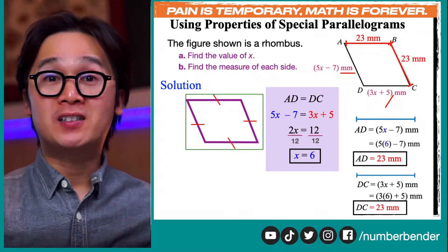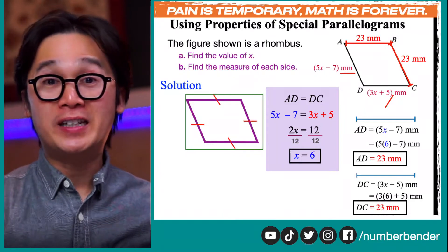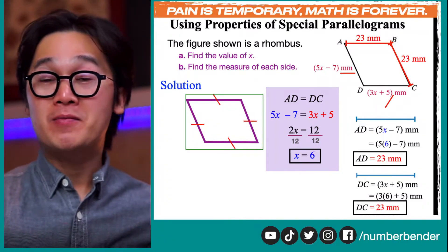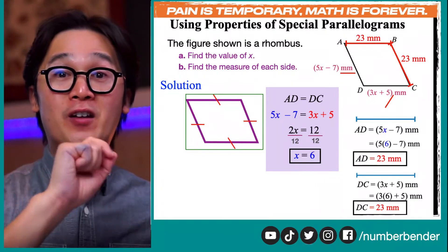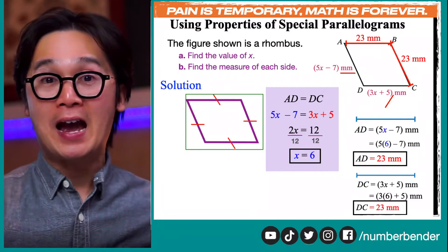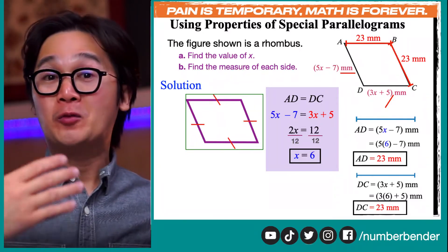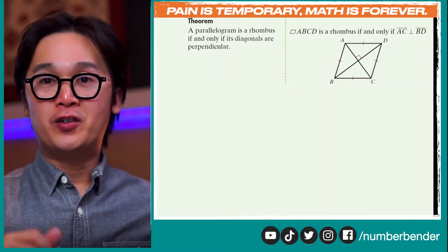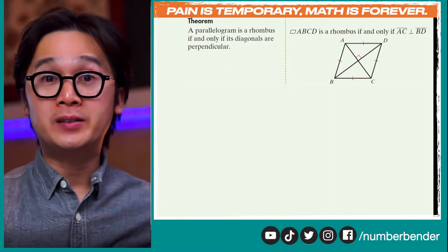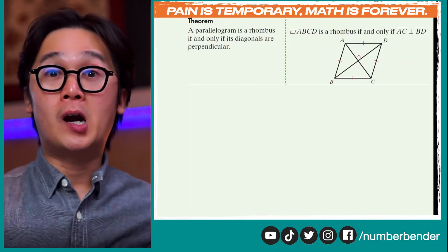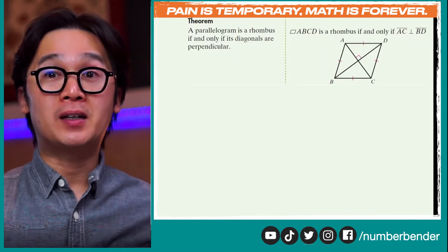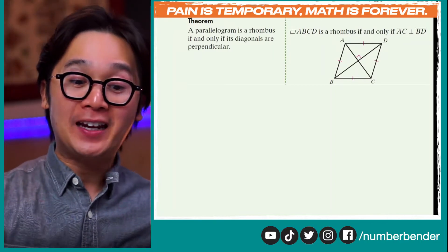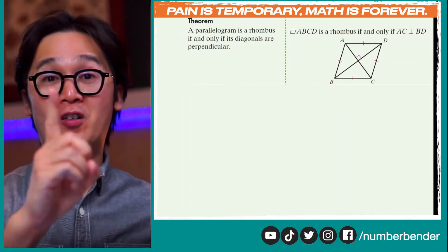That is our first special parallelogram for today. We're going to be working on some other special properties of our special parallelograms that will help us even more, because the more information we know about the shapes or polygons, the more clues we have to solve geometry problems. The first theorem is about the diagonals of a rhombus. According to the first theorem, the diagonals of the rhombus are perpendicular to each other, which means line segment AC and line segment BD — their intersection will form a 90 degree angle because they are perpendicular.